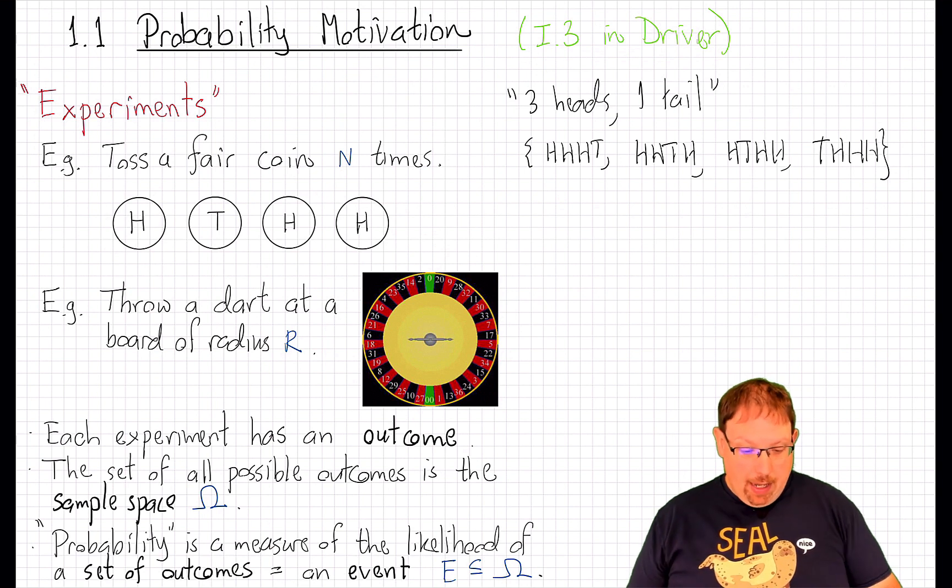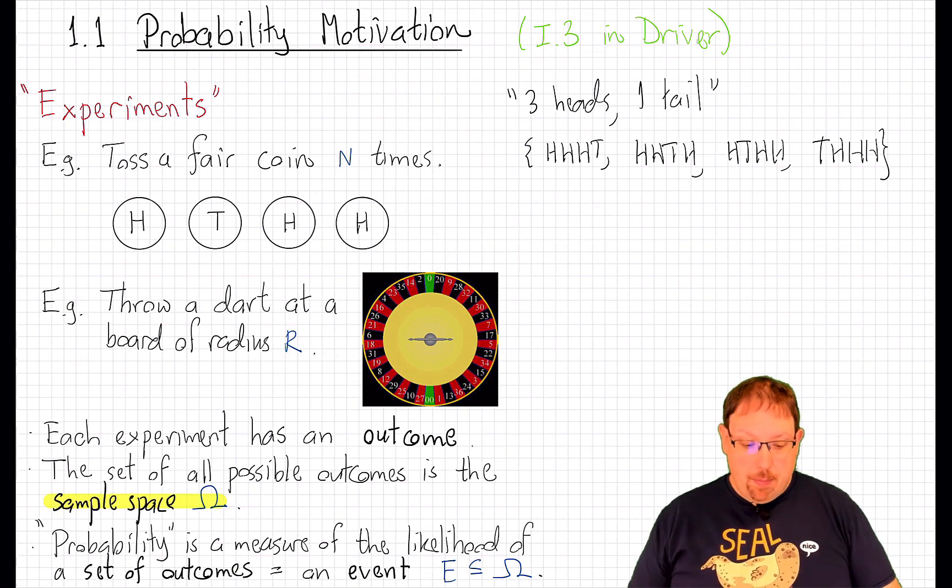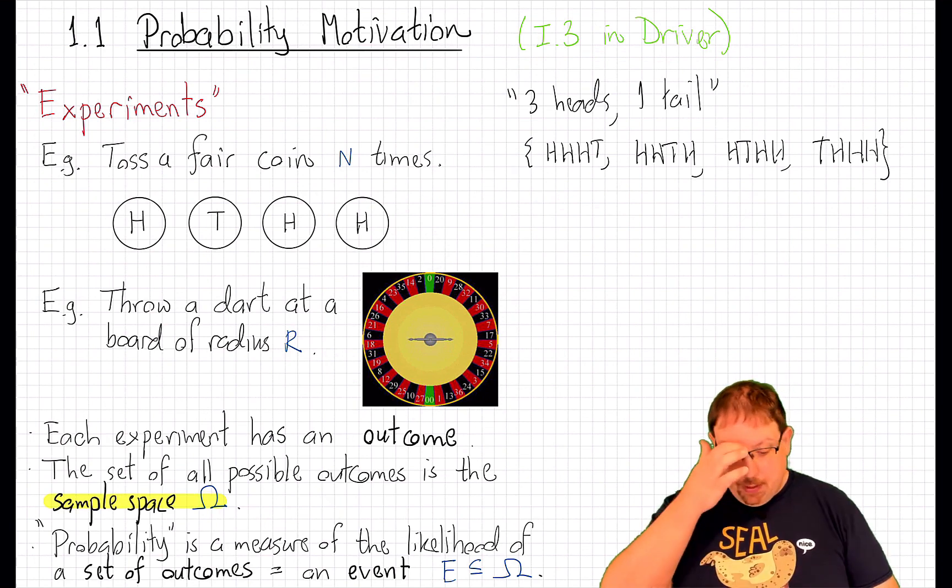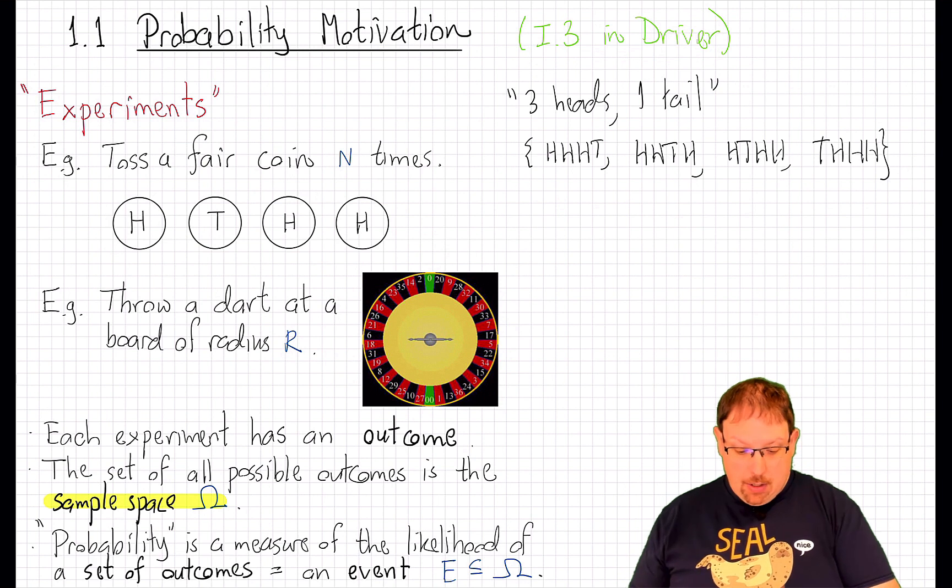The collection of all outcomes is called the sample space, and is usually denoted by a capital omega. Events are subsets of the sample space.